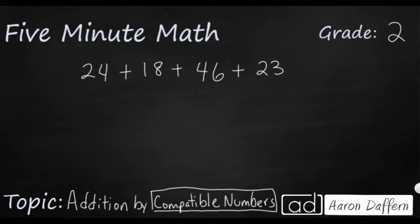And so one thing you want to look at whenever you're trying to add numbers in your head mentally, is look at the ones places. Do you see any ones places that if you add together make a ten? Because when you can make a ten, that makes everything easy. And one thing we should see here is we should see the 24 and the 46.